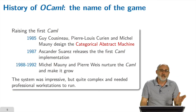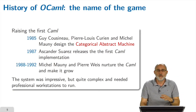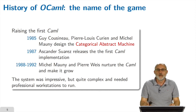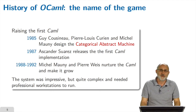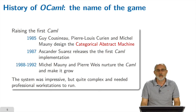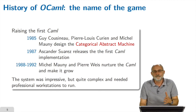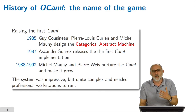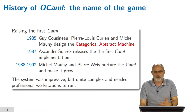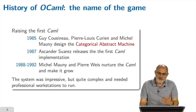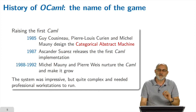From 1988 to 1992, many people worked on the system, in particular Michel Mauny and Pierre Weis, who made it grow. By the end of that period, it was an impressive, very sophisticated and powerful system — but also very complex and heavy to use. You needed a professional workstation to run it, so it was limited to very specific research work.